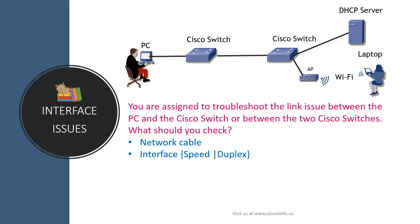As a network engineer, you can easily tell you should check the network cable or the interface for the speed or duplex settings. The bad news is you may have to go to the end user's PC to troubleshoot the issue. However, the good news is you can check everything on a Cisco switch if you know the interface connected to the PC or the Cisco switch.